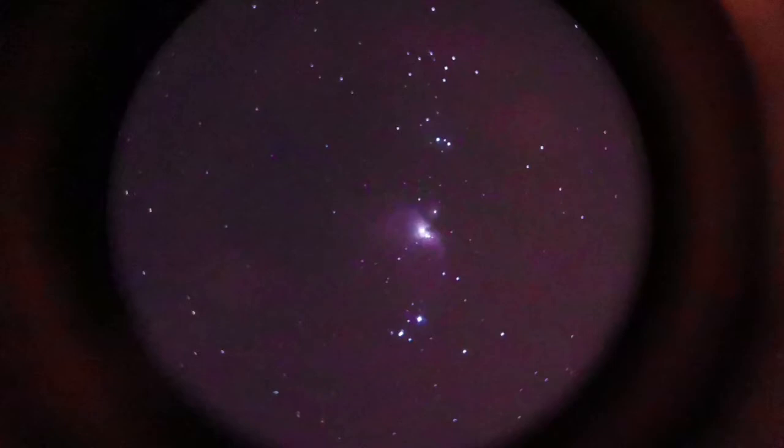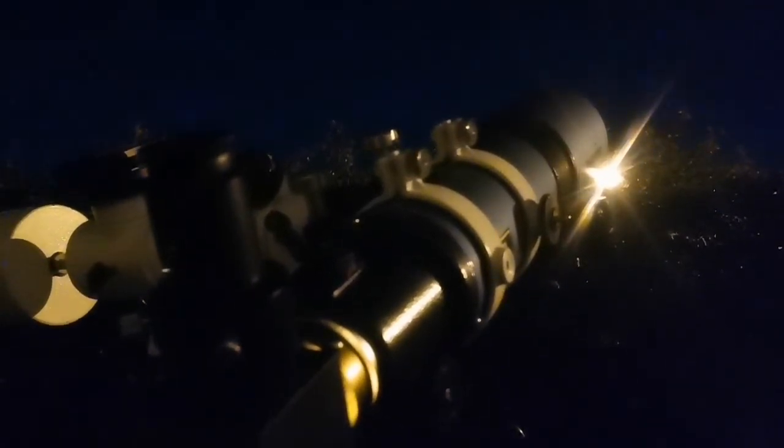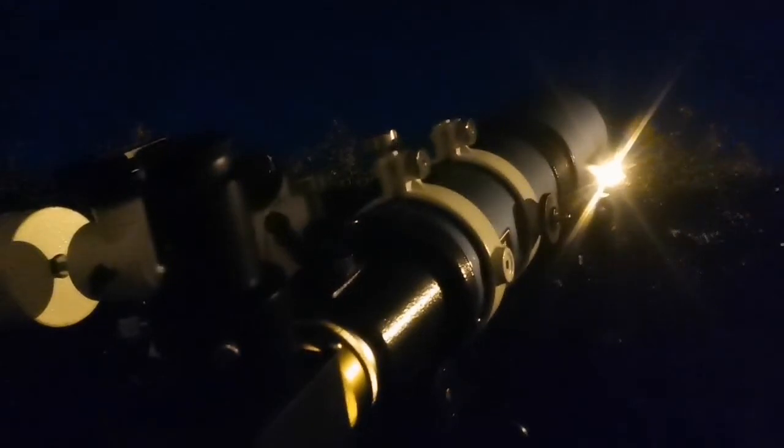That's the thrill of childhood coming back. Plossls are the best eyepieces you can ever have. Looking at the Orion Nebula with this 4-inch short tube refractor Skywatcher, 500 millimeter focal length and 102 millimeter objective lens.